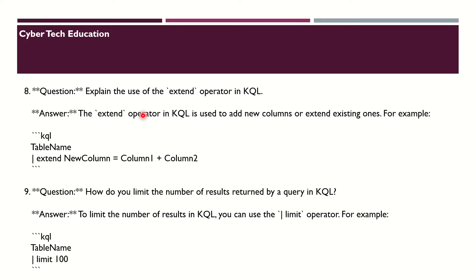The next question is: explain the use of the extend operator in KQL. The extend operator in KQL is used to add a new column or extend an existing one. For example: TableName | extend NewColumn = Column1 + Column2.